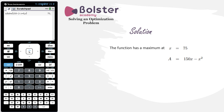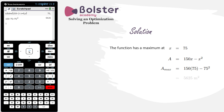We replace x with 75: 150 × 75 - 75² = 5625. This is the maximum value of the function. The maximum occurs at x = 75, and the maximum area is 5625 square meters. This is the maximum area that we can enclose with 300 meters of fencing.